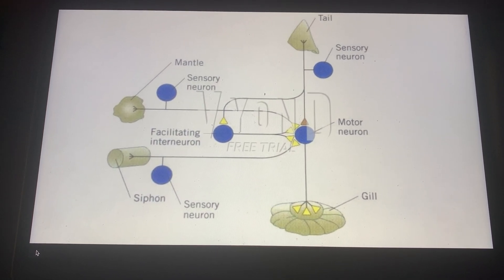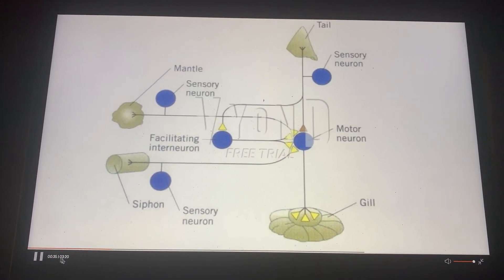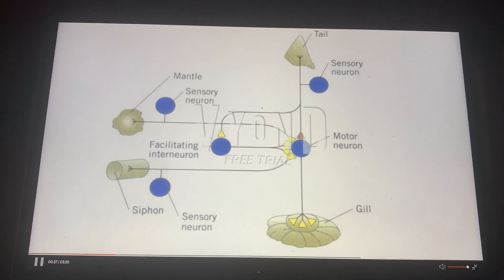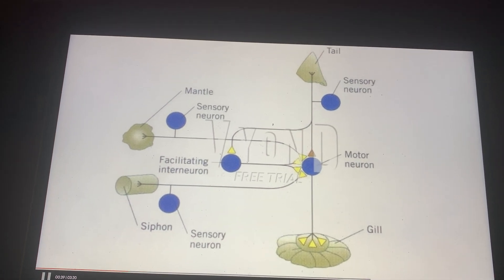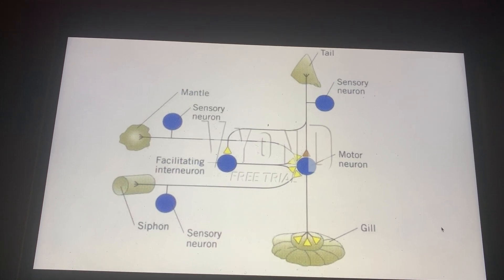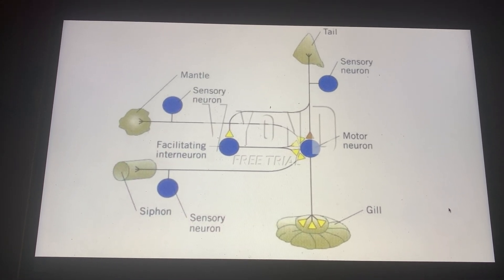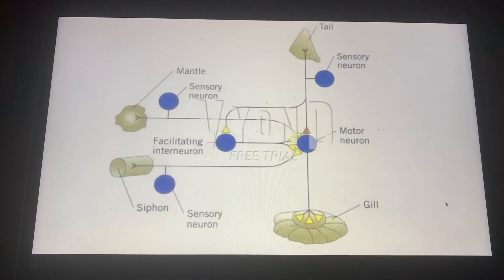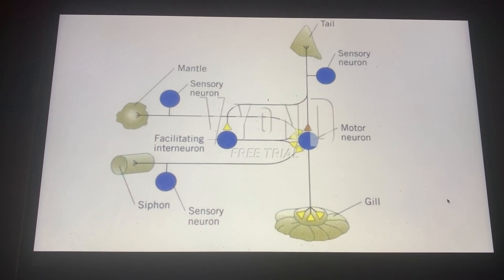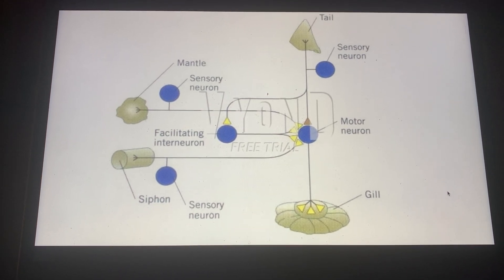Looking at aversive stimuli at the molecular level, we can see it's a very similar process to sensitization. If there's an electrical stimulation in the tail shock, for instance, we have sensitization occurring. There's a release of serotonin, which activates a G-protein receptor. This is a very similar mechanism to what I explained previously, where adenylyl cyclase is activated.